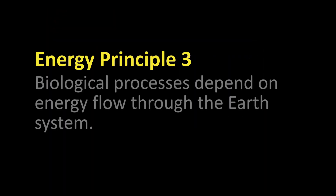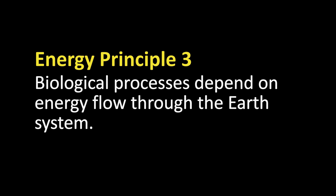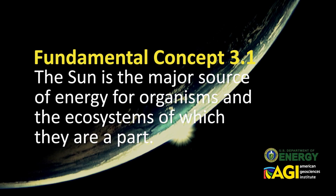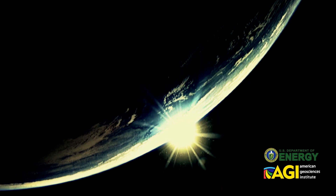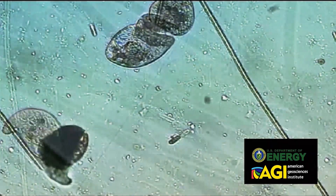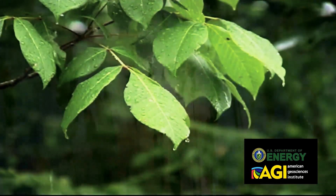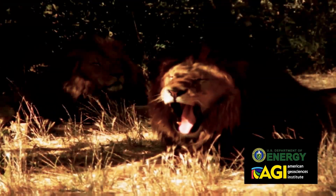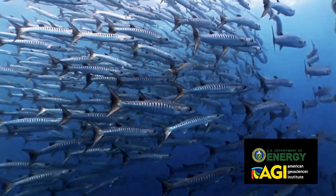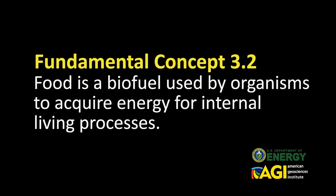This is Energy Principle 3: biological processes depend on energy flow through the Earth system. The Sun is the major source of energy for organisms and the ecosystems of which they are a part. Producers such as plants, algae, and cyanobacteria use the energy from sunlight to make organic matter from carbon dioxide and water. This establishes the beginning of energy flow through almost all food webs.